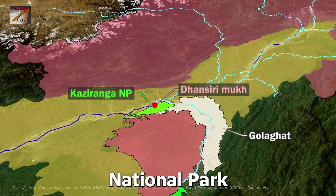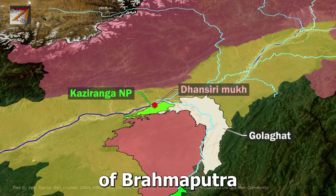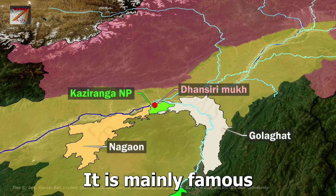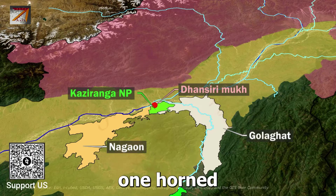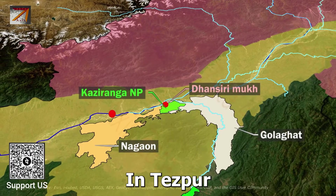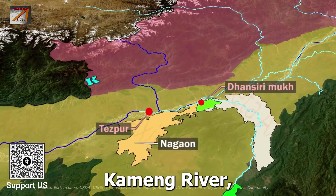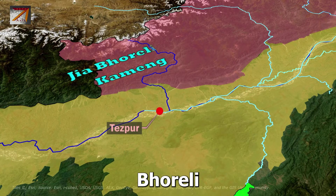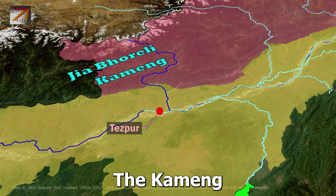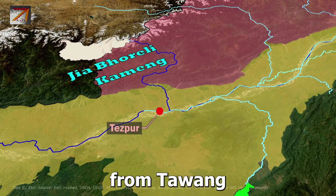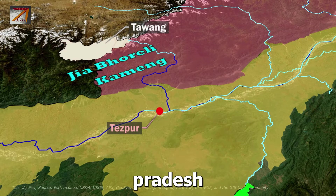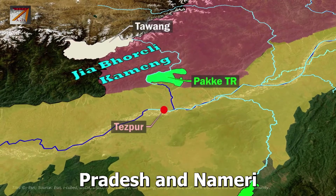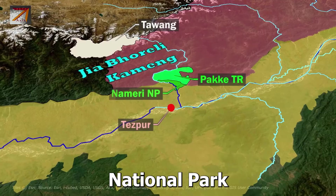Kaziranga National Park is located on the left banks of Brahmaputra in Golaghat and Nagaon district of Assam, mainly famous for India's one-horned rhinoceros. In Tezpur, the Kameng River, also called Jia Bhoreli, meets Brahmaputra. The Kameng River originates from Tawang district of Arunachal Pradesh and flows through Pakke Tiger Reserve in Arunachal Pradesh and Nameri National Park in Assam.